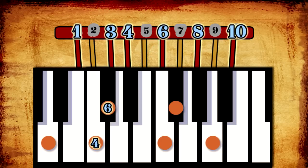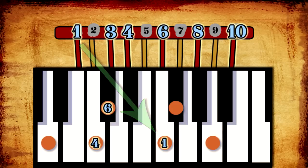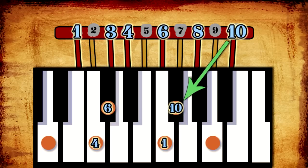String number 1 is tuned to the third scale tone, in this case F. String number 10 is tuned to the fourth scale tone, in this case F-sharp.